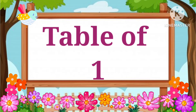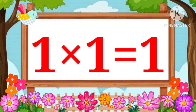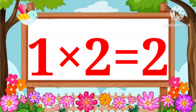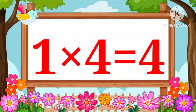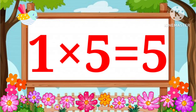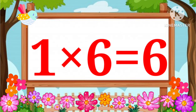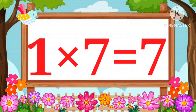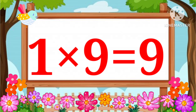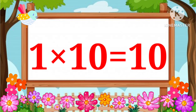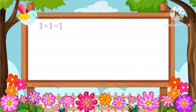Table of 1. 1 one's a 1, 1 two's a 2, 1 three's a 3, 1 four's a 4, 1 five's a 5, 1 six's a 6, 1 seven's a 7, 1 eight's a 8, 1 nine's a 9, 1 ten's a 10.